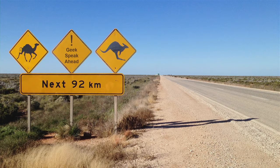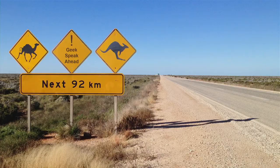When I came over here, I passed this road sign, and the nature of the talk is such that a little bit of geek speak will creep in, but I promise I'll try and keep it as small as possible. I have a conflict of interest, which is that I own a software company, but none of the applications I show you today are for sale, and they all use public domain algorithms freely available on the internet, which I can supply source code for should you wish.